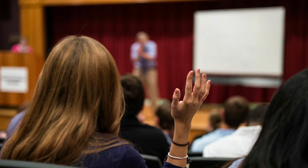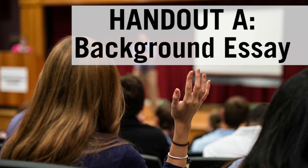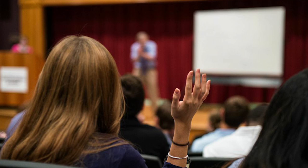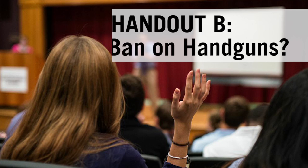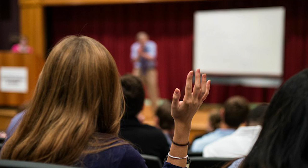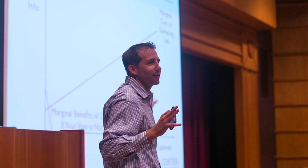To begin, have students read Handout A, Background Essay: How has the Second Amendment been interpreted? And complete Handout B, Total Ban on Handguns, to decide whether or not they think certain regulations about guns are constitutional or not.